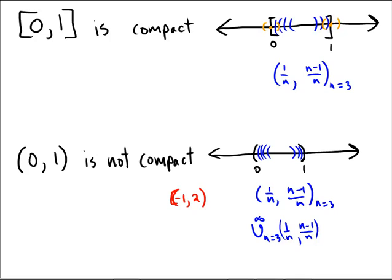But notice that no finite set of these could possibly cover the entire space. It's going to stop somewhere just short of 1 and just short of 0.